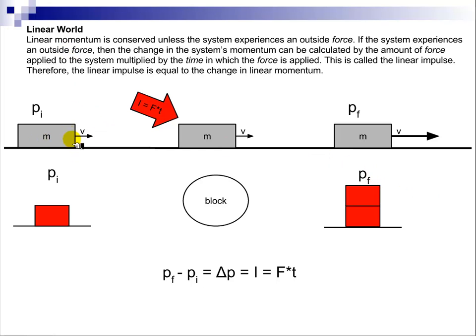In the linear world, let's say we've got a mass here that's got a particular velocity. It therefore would have a particular momentum. The mass times velocity would equal that initial momentum.